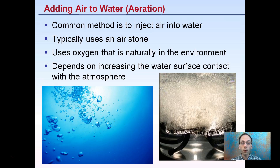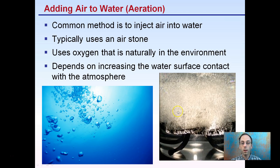The active form of aeration for growers is commonly used by injecting air into the water, and this typically uses an air stone. We take an air stone, put it at the bottom of a tank, and use an air pump to pump air down through a tube, letting the air bubbles come through the water and mix it that way. This uses oxygen that's naturally in the environment, and depends on increasing the water surface contact with the atmosphere.